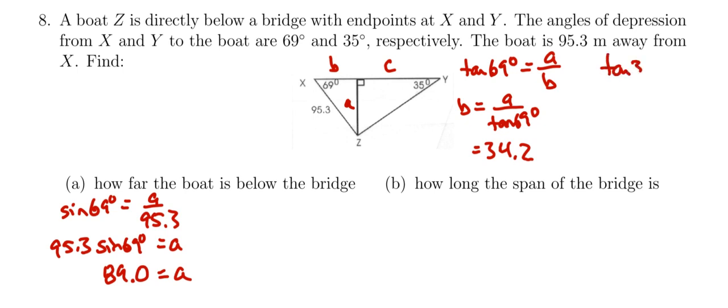Additionally, I know that the tangent of 35 degrees is going to equal A over C. So C is going to equal A over the tangent of 35.